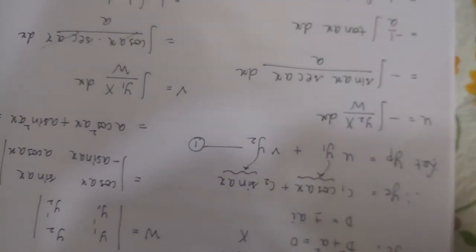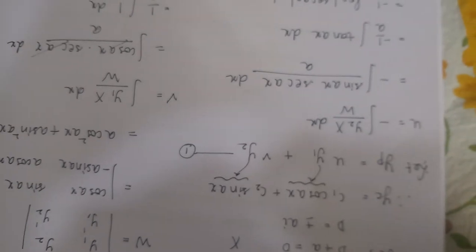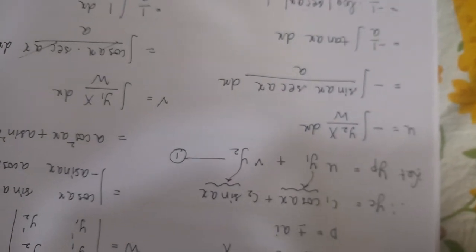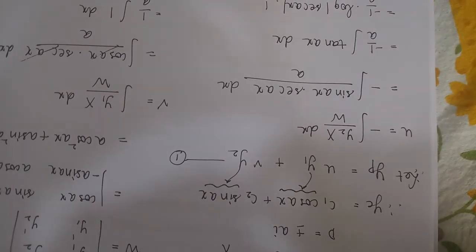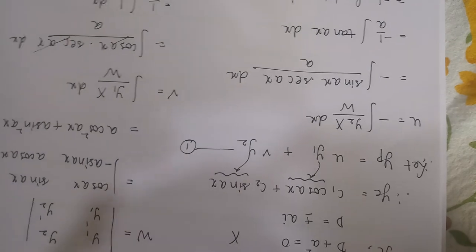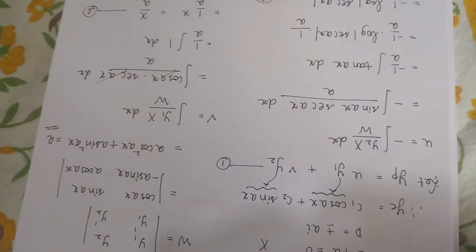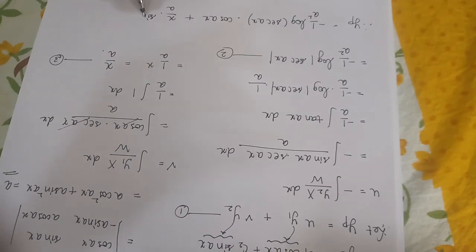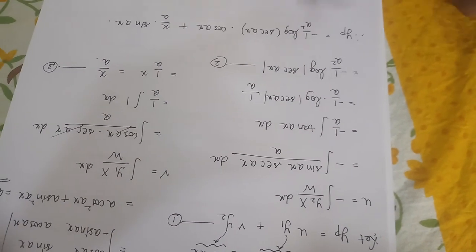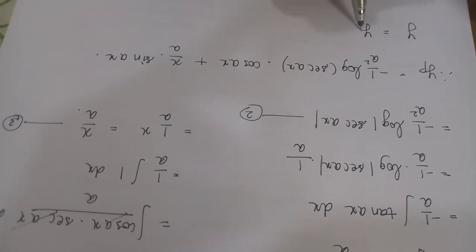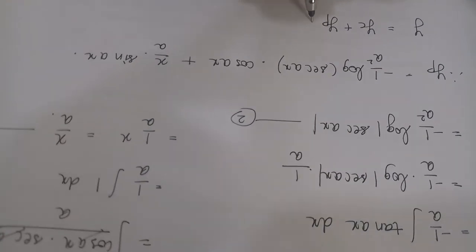So Yp is u into y1. So u value we got as minus 1 upon a square log of sec ax, y1 is nothing but cos ax, plus v. v value we got as x by a into y2 value is sin ax. So this becomes your Yp, and Y is nothing but Yc plus Yp.